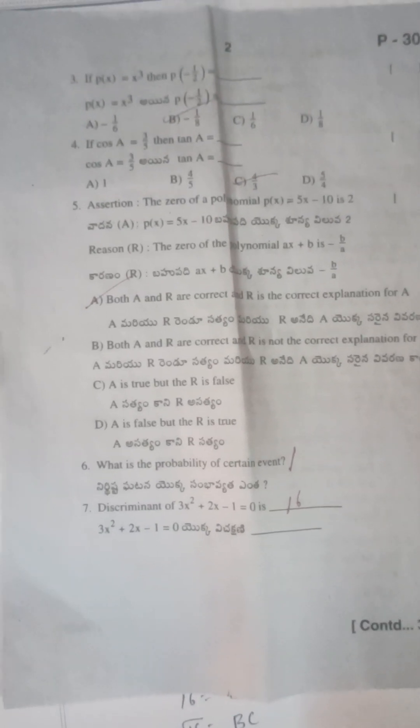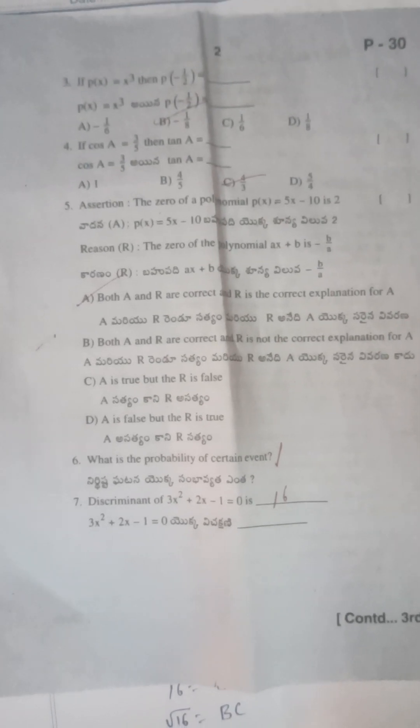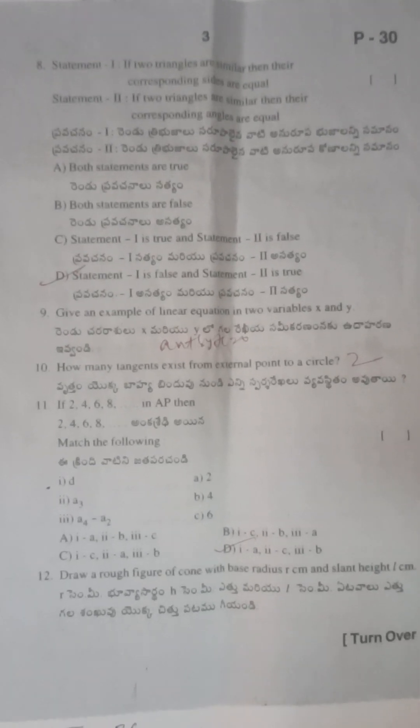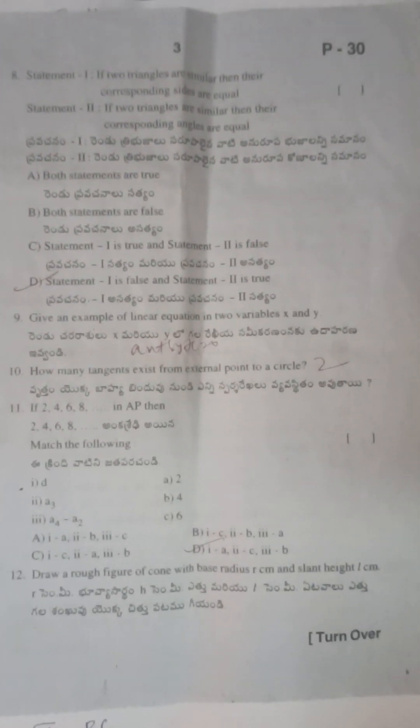Next, discriminant is 16. Eighth one is D, ninth one is ax + by + c = 0. Tenth one is 2, eleventh one is D.